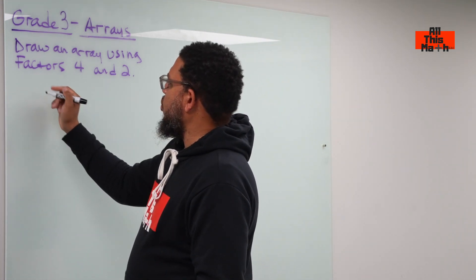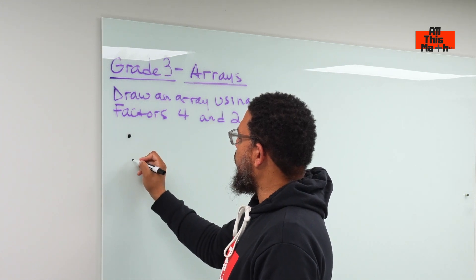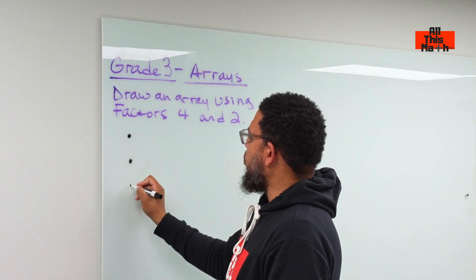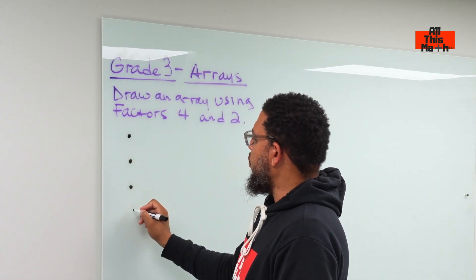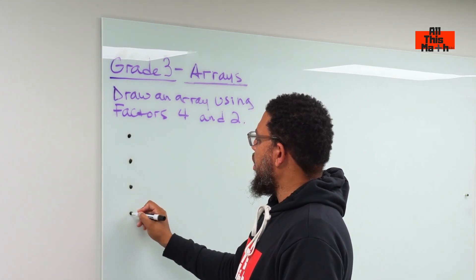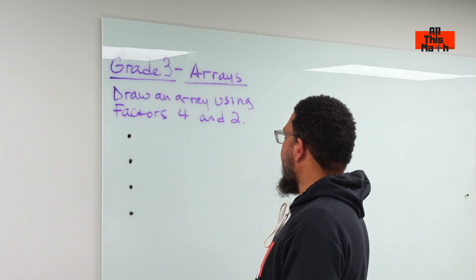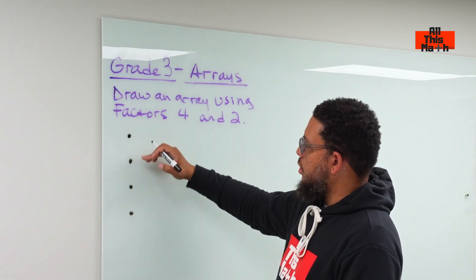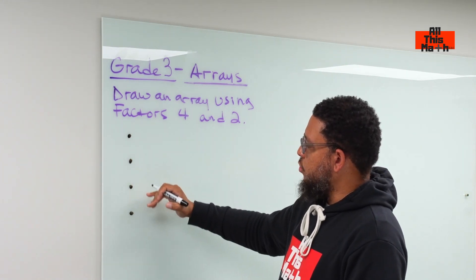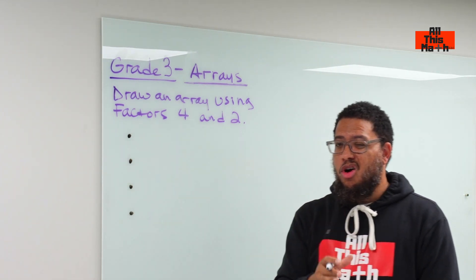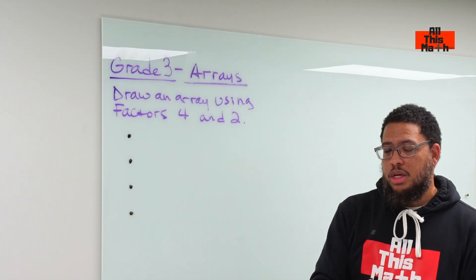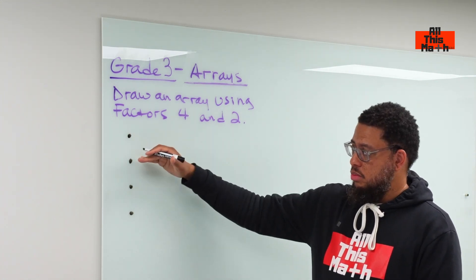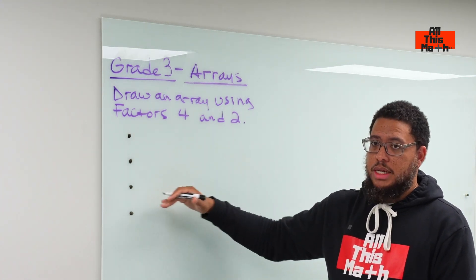So let's do four rows. I'm going to do one dot — row one, row two, row three, and row four. So these are four rows. And this is something that children often confuse — rows are horizontal.